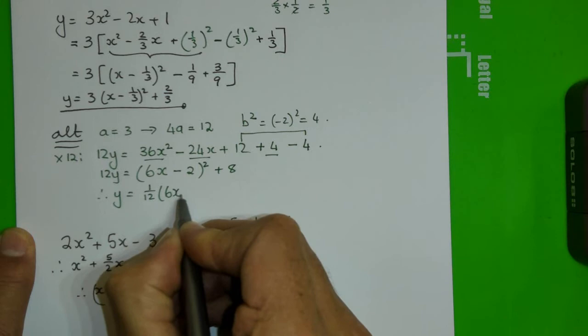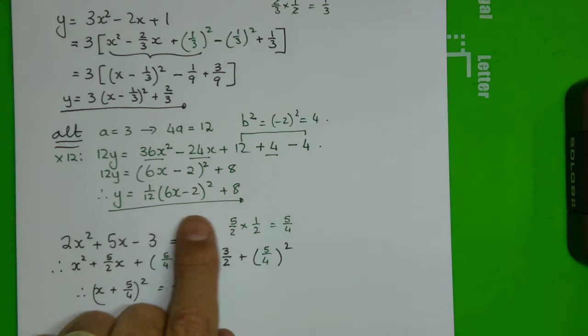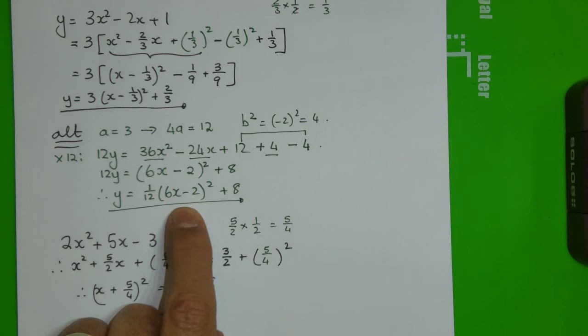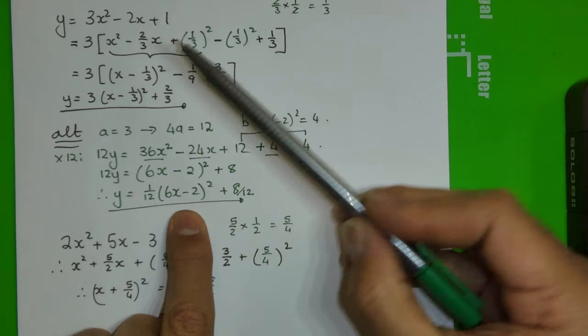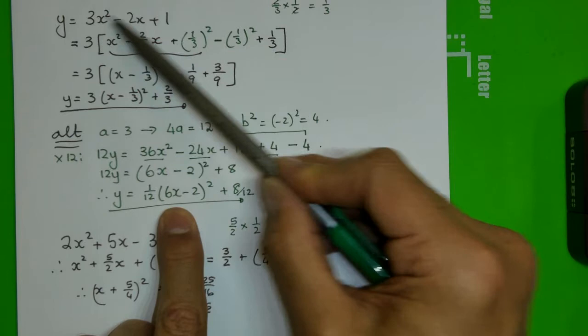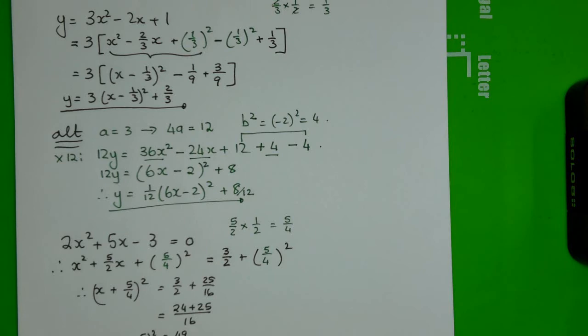So 12y equals (6x − 2)² + 8, and dividing by 12 gives y = 1/12 · (6x − 2)² + 8/12. The square is completed. What completing the square does is take every x running loose in your expression and contain it inside a bracket with a square over it — and that's exactly what we wanted.